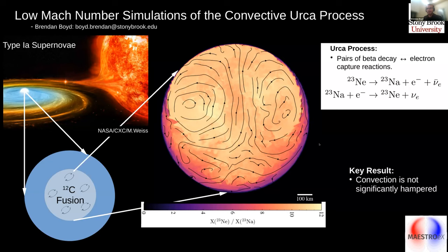The real main key result that we found from this is that the convection is not significantly hampered like it was previously thought, and that these URCA reactions are not strong enough to do that.